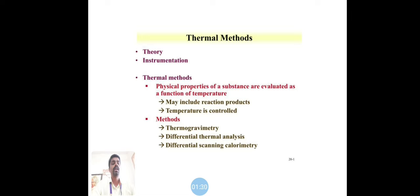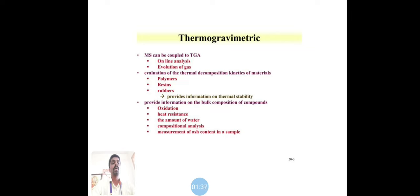The three important methods are thermogravimetric, differential thermal analysis, and differential scanning calorimetry. Thermogravimetry is completely based on temperature and mass of the unknown sample. It's especially used to determine the combustion kinetics of materials like polymers, resins, and rubbers.